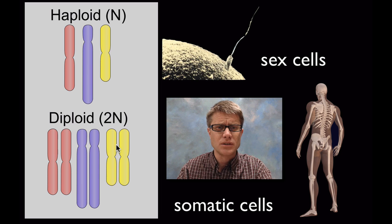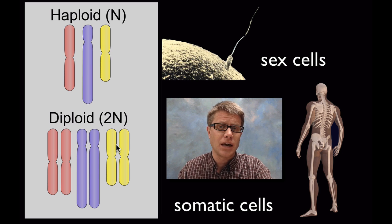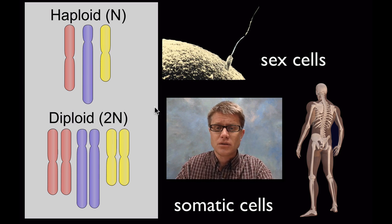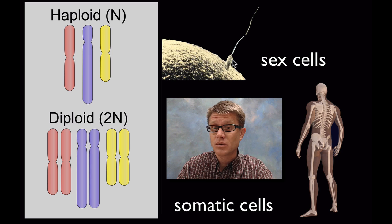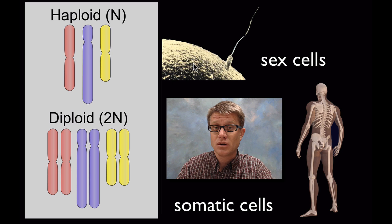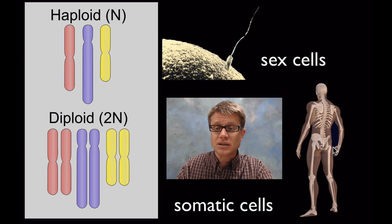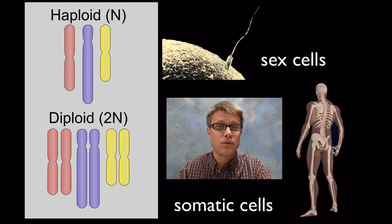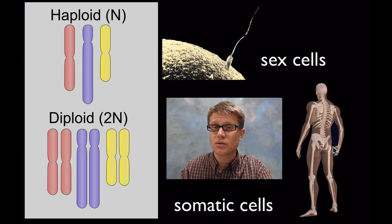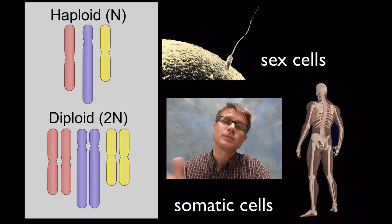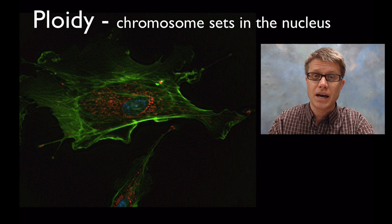Where are the haploid cells? Those are going to be the sex cells, or the gametes. In humans, the sperm is going to have 23 chromosomes and the egg is going to have 23 chromosomes. Each of those cells by themselves are haploid, or N. But the somatic cells — all the body cells — are going to have 46 chromosomes, because we get 23 from our mom and 23 from our dad.